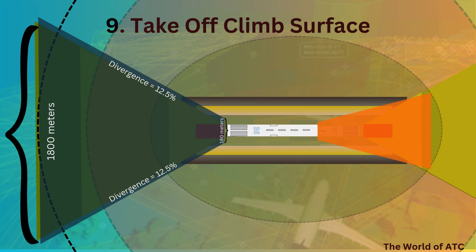While extending, it would have a divergence of 12.5% on both sides, while the final width would be 1800 meters.